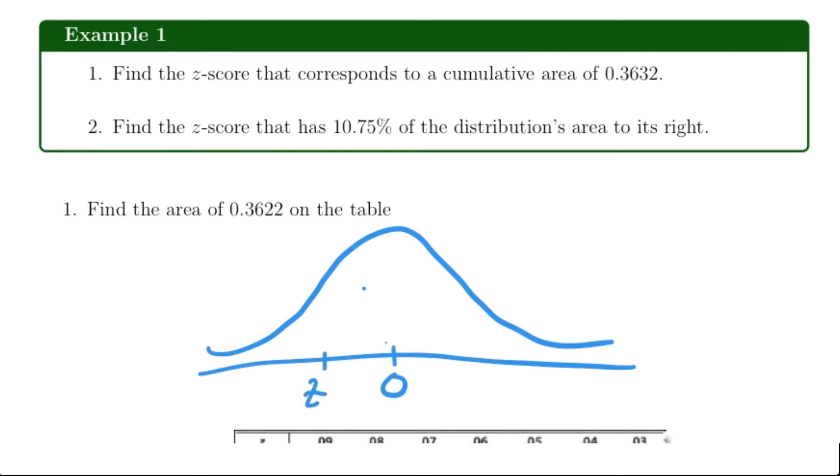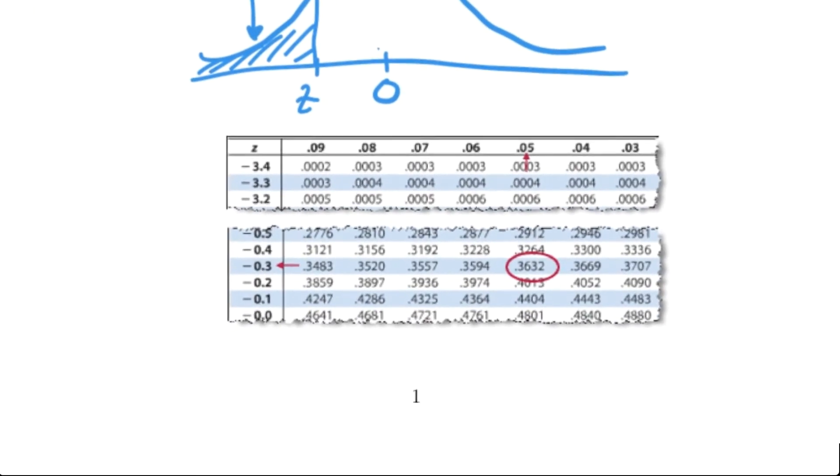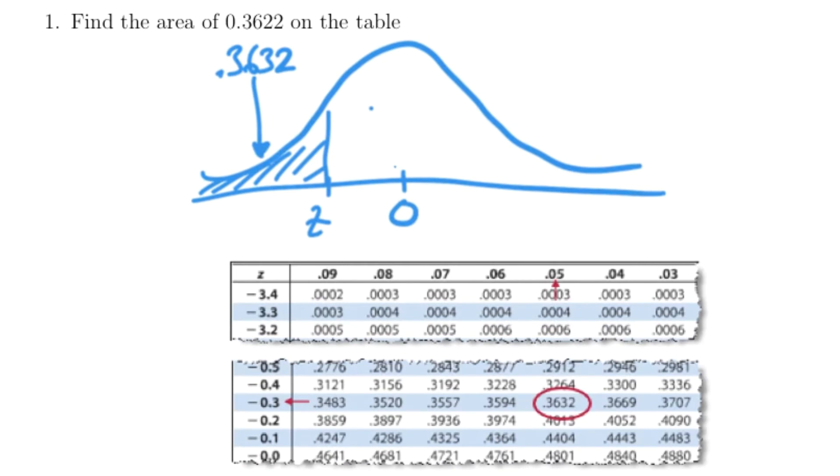We'll shade that area of 0.3632. Since it's a cumulative area, that's exactly what the normal table will tell us. Here's what the normal table looks like, and I've already circled it. We just need to figure out what z-value gives us 0.3632. We have negative 0.3 and then 0.05, which gives us a z-value of negative 0.35.